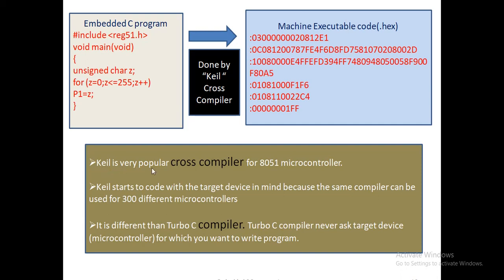Keil is a very popular cross compiler for the 8051 microcontroller. Also, Keil can support nearly 300 plus different microcontrollers and can generate the machine executable code for all of them.